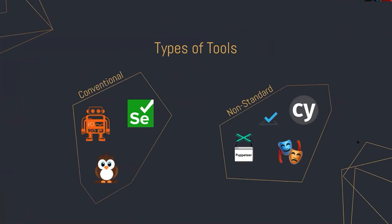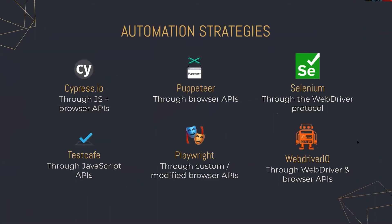We can group the tools out there into two categories: I call them conventional and non-standard tools. On the conventional side, we have tools like WebDriver.io, Selenium, and Nightwatch. On the other side, we have Cypress, Puppeteer, Playwright, and TestCafe. All of them use different automation strategies.